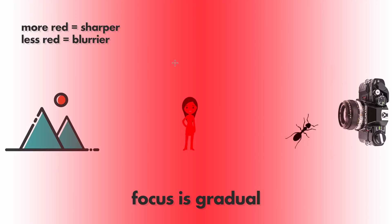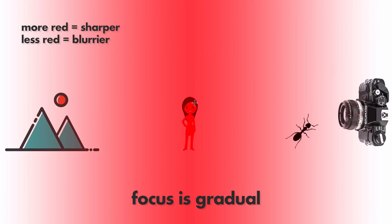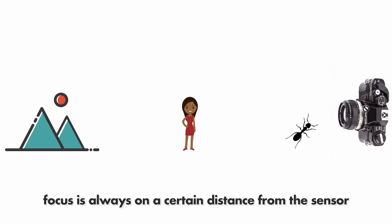This is actually a great analogy for focus, because when you focus on something - for example a person - the area that is in absolutely perfect focus is always like infinitely thin. You can make the whole person look in focus because a little bit outside the middle it is still sharp enough that you can't really notice a difference between perfect sharpness and 99.9% sharpness. In this example I have a camera representing the sensor, an ant representing something really close to the lens, a person representing a typical mid-distance subject, and mountains representing infinity.